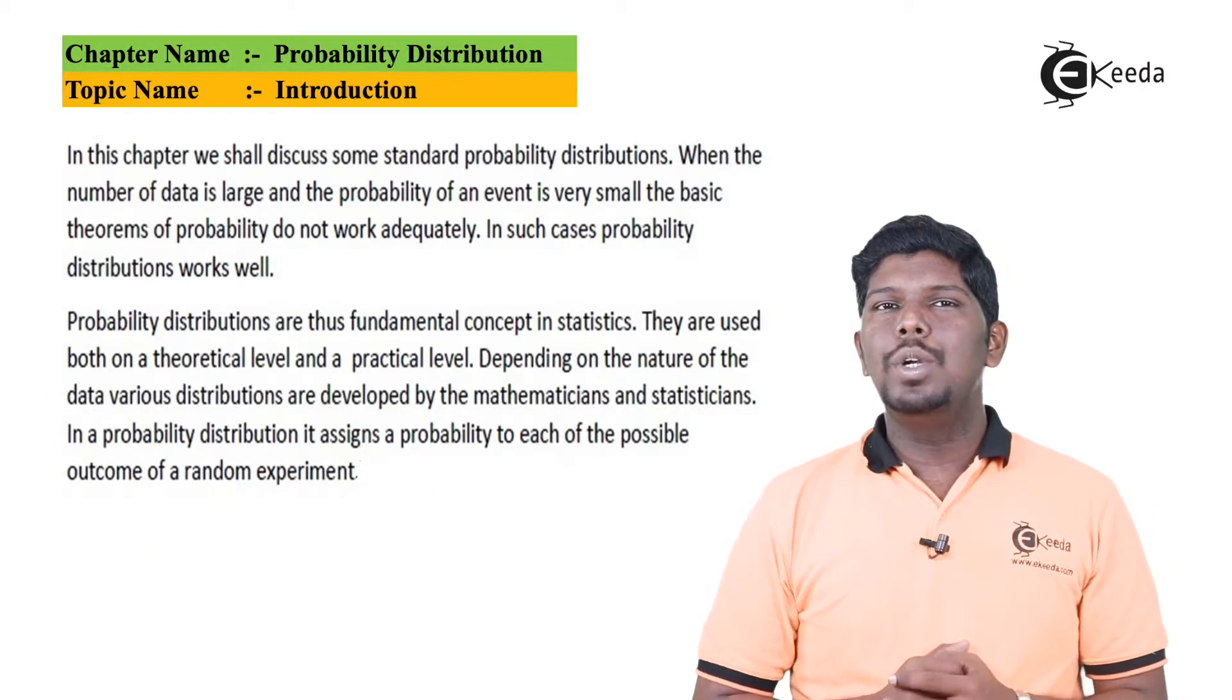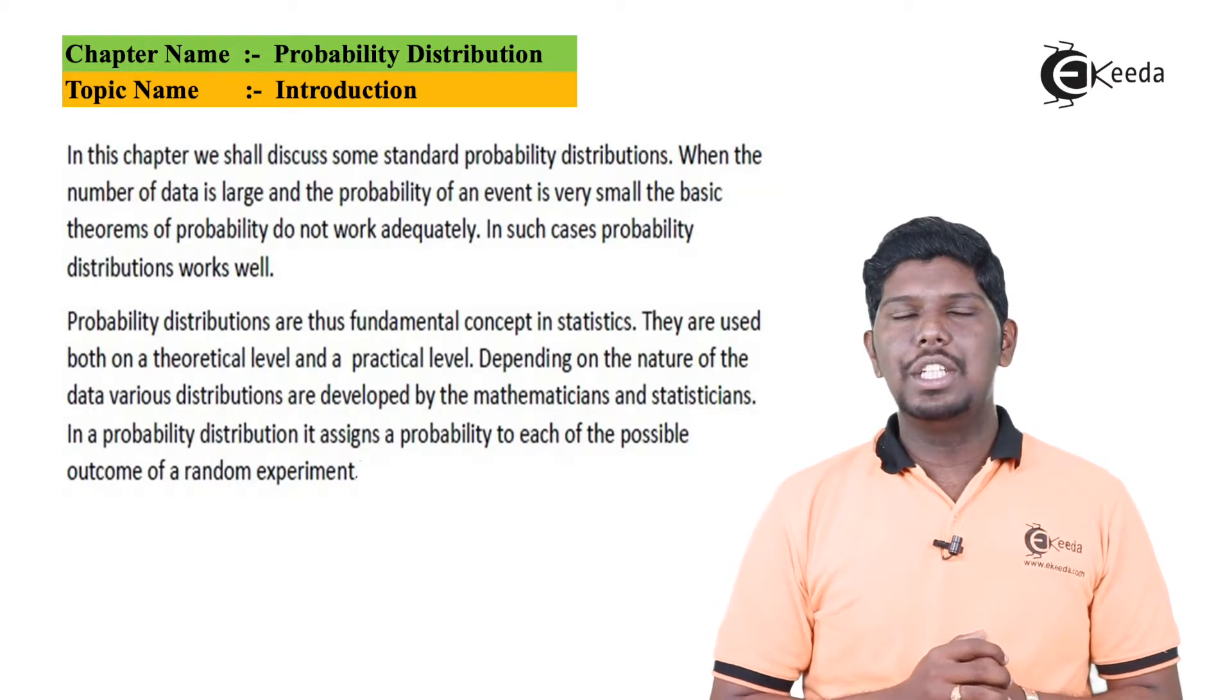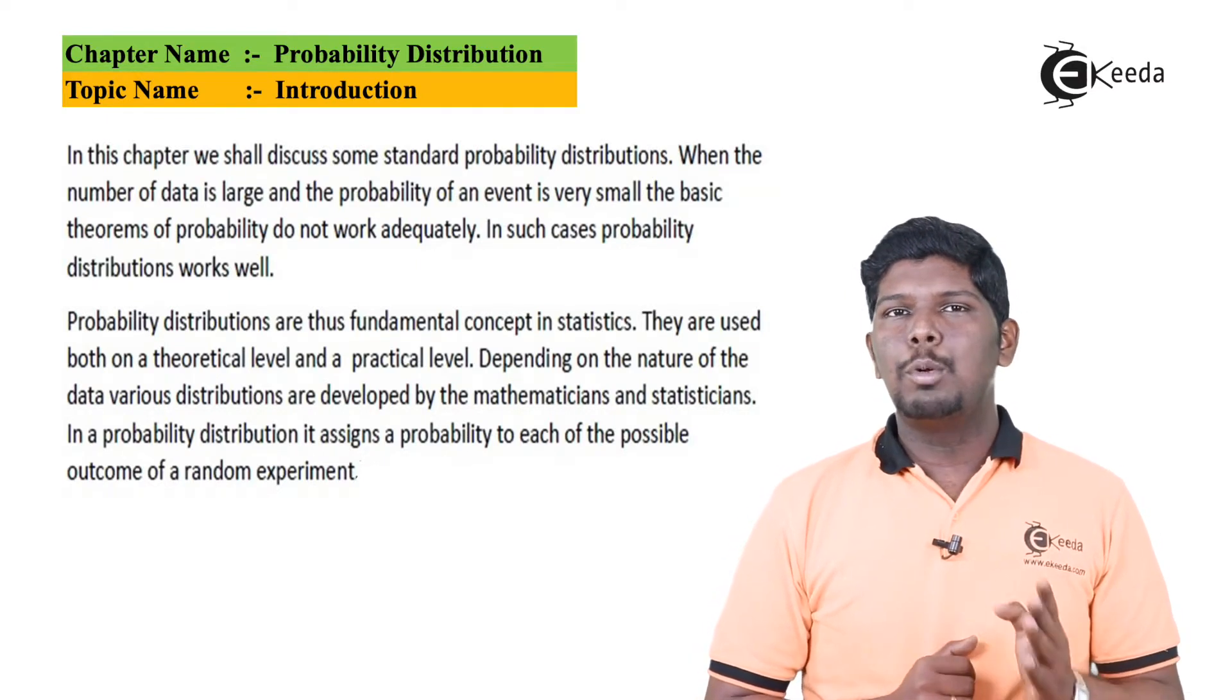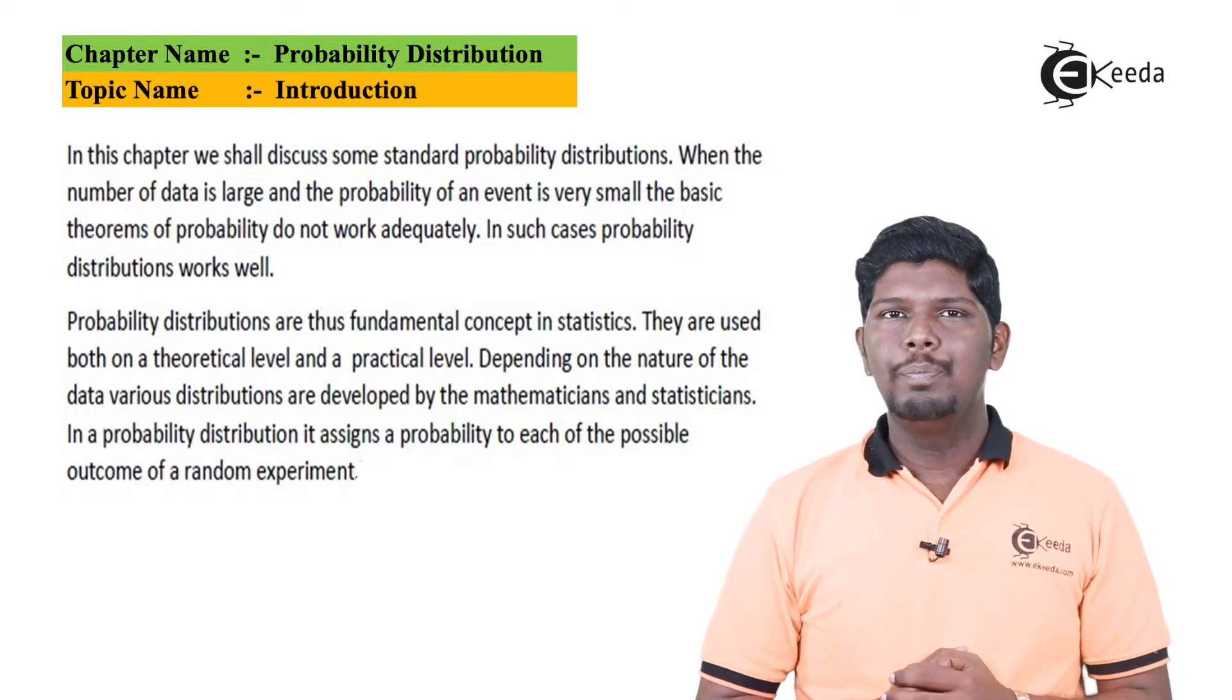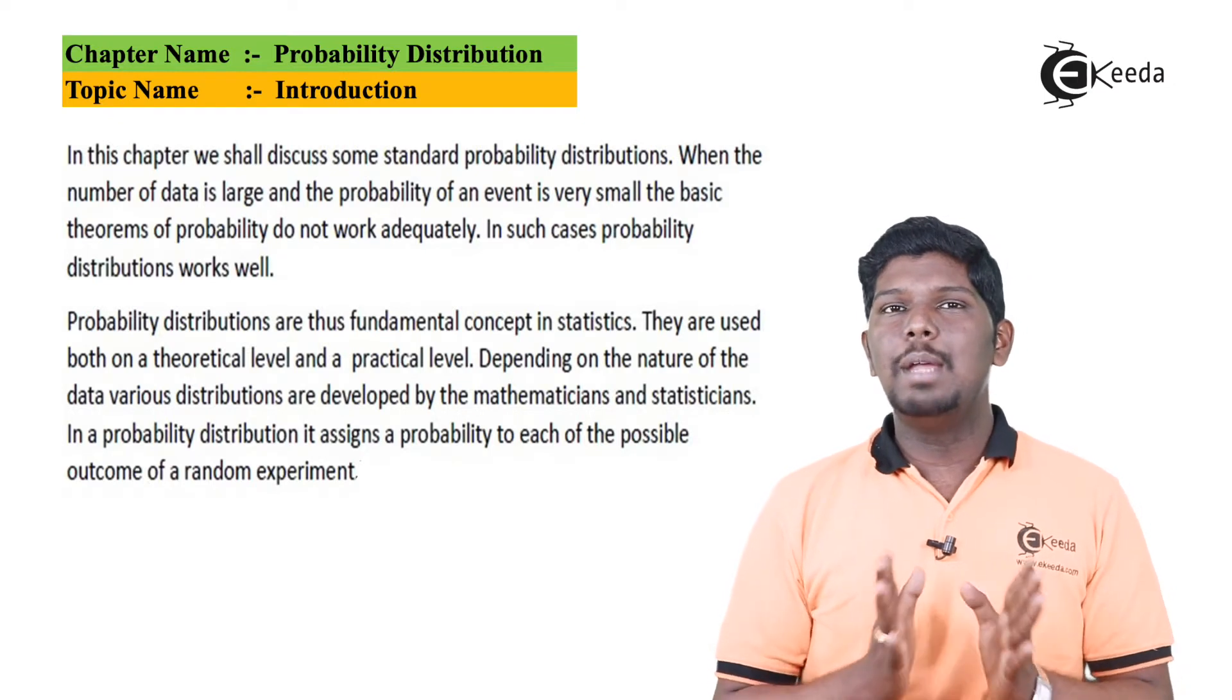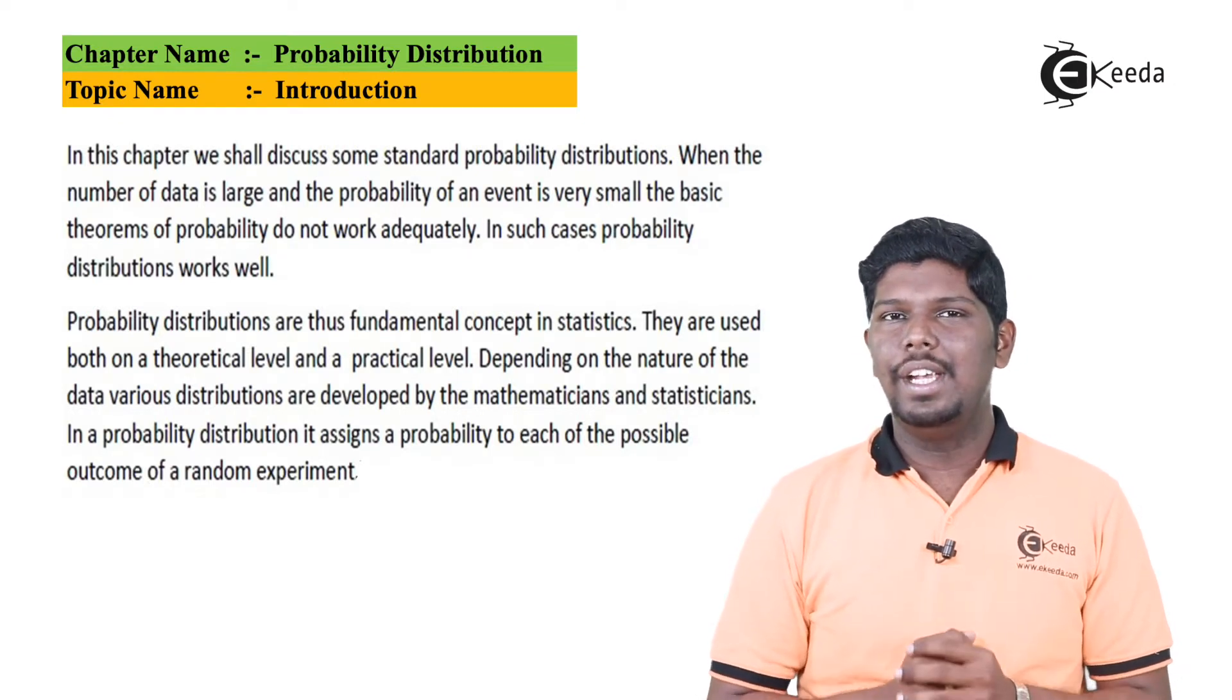In this chapter, we are going to discuss different types of probability distributions. Whenever the number of data is too large and the probability distribution is too small, our basic theorems do not work adequately. So for that purpose, different types of probability distributions are invented.